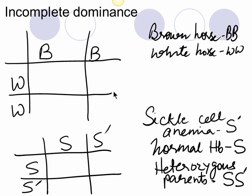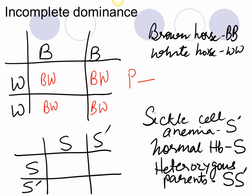For incomplete dominance, let's cross a brown horse (BB) with a white horse (WW). When we cross them, all offspring will be 100% Palominos — the brown and white mixture — and genotypically 100% BW (heterozygous).